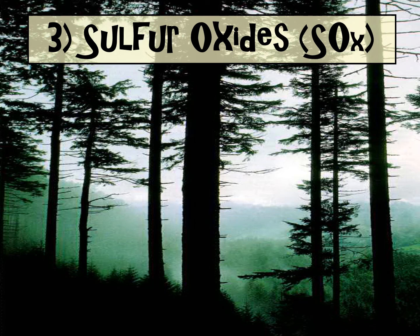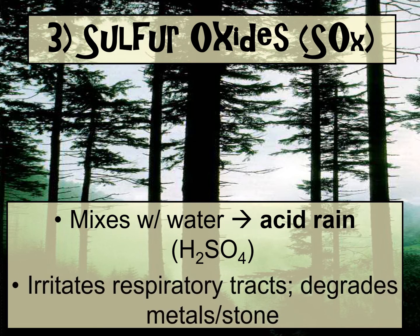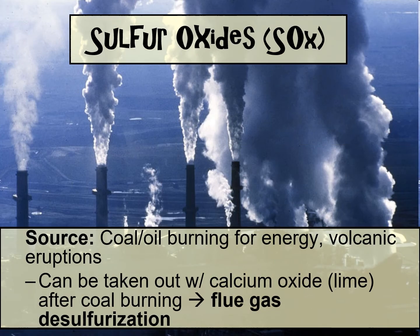The third classification is sulfur oxides, which are quite harmful. They can mix with water in the atmosphere and make sulfuric acid that comes down as acid rain. They also irritate respiratory tracts — your lungs and trachea — and can degrade metal and stone. In the U.S., sulfur oxides mainly come from burning coal or oil for energy, and can also be released naturally through volcanic eruptions. We have developed flue gas desulfurization to remove sulfur from coal before burning, though it is expensive and energy-intensive.